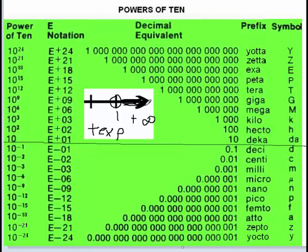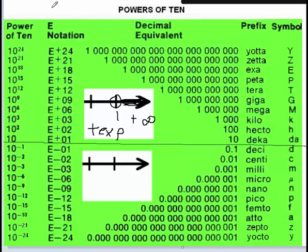On the other hand, negative exponents produce small numbers. We could say that negative exponentials produce numbers between 0 and 1 — in other words, decimal numbers, really small numbers. Not negative numbers, but really small numbers. So we make the association: negative exponentials produce really small numbers and positive exponentials produce large numbers.